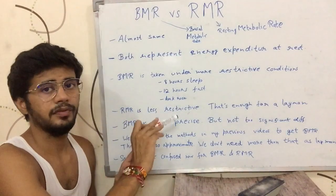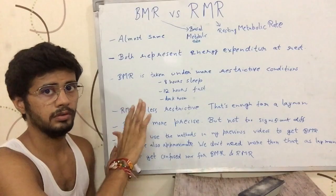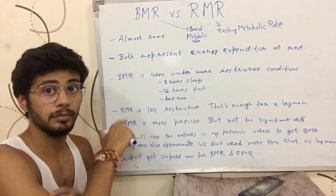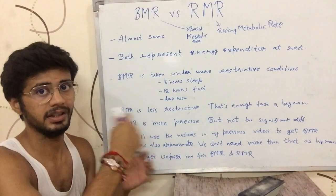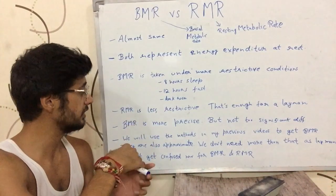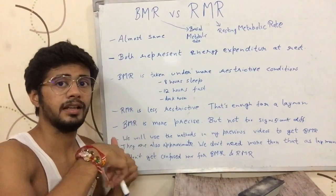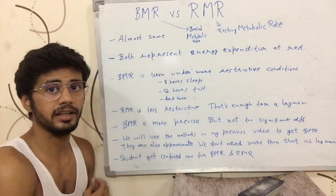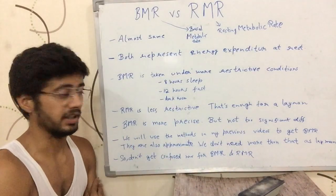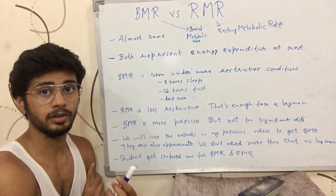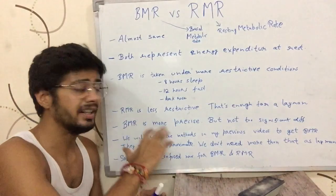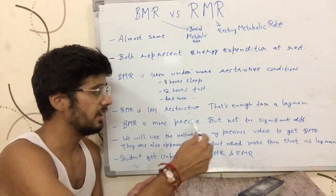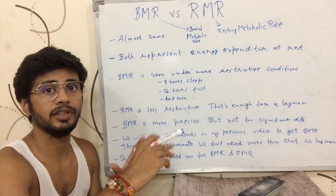That is enough for a layman to know about the difference between BMR and RMR. BMR is measured with more restrictive conditions, RMR with lesser restrictive conditions. BMR is measured to get a more precise reading of the energy expenditure — the calories that you burn at rest. So the readings from BMR are more precise than RMR, but there is not too much of a difference.